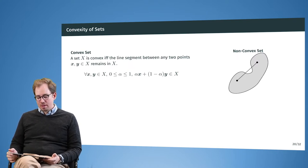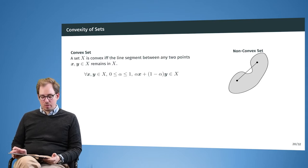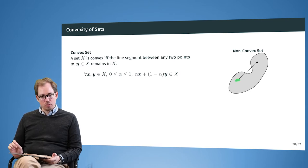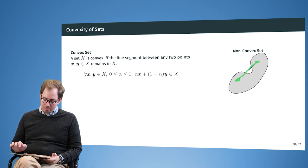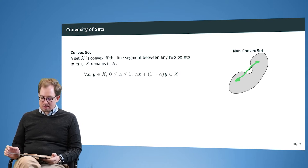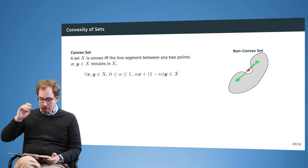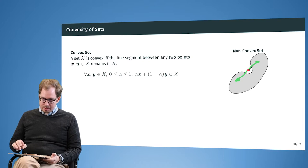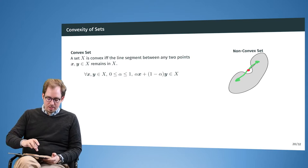Convexity of sets is actually really simple. What you require is that if you take two points from the set and draw the line segment between them, you remain entirely within the set. The example shown here is a non-convex example because in the middle there is a point on the line segment that is actually outside the set.